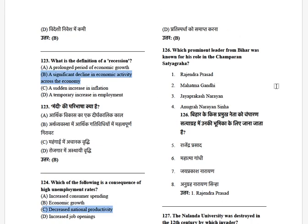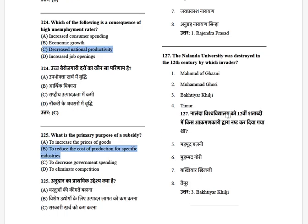Which prominent leader from Bihar was known for his role in the Champaran Satyagraha? The options are: Rajendra Prasad, Mahatma Gandhi, Jayaprakash Narayan, and Anugrah Narayan Sinha. The answer is Rajendra Prasad.